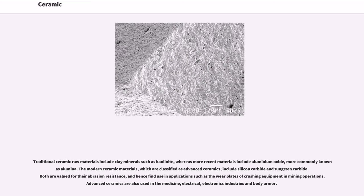Traditional ceramic raw materials include clay minerals such as kaolinite, whereas more recent materials include aluminium oxide, more commonly known as alumina. The modern ceramic materials, which are classified as advanced ceramics, include silicon carbide and tungsten carbide. Both are valued for their abrasion resistance, and find use in applications such as the wear plates of crushing equipment in mining operations. Advanced ceramics are also used in medicine, electrical, electronics industries and body armor.